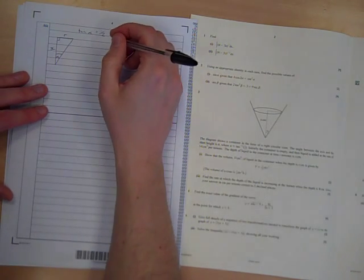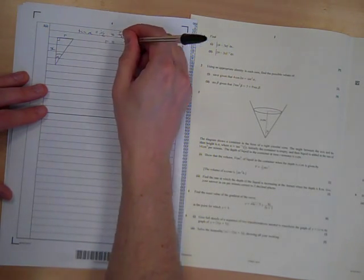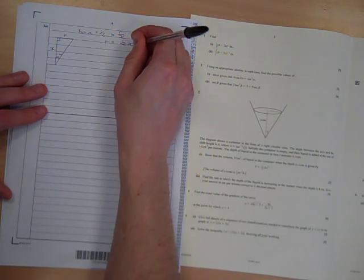So if we rearrange that, that tells us, I think, that r is equal to a half x.